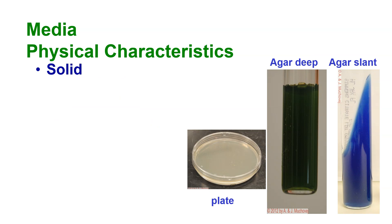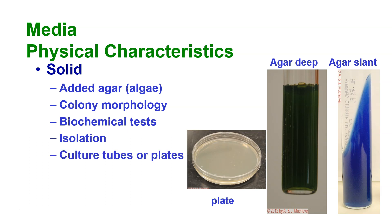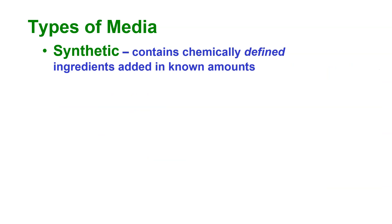We also have solid medium. On the right-hand side you can see a tube that has a slant in it — it's standing upright and holding its shape. We often use solid media in culture plates; it normally has about two percent agar added. We use it for colony morphology to see how things grow and form, for biochemical tests, and for isolation, which is one of its main uses. It can be used in tubes or plates, and normally we have a very specific reason for each.